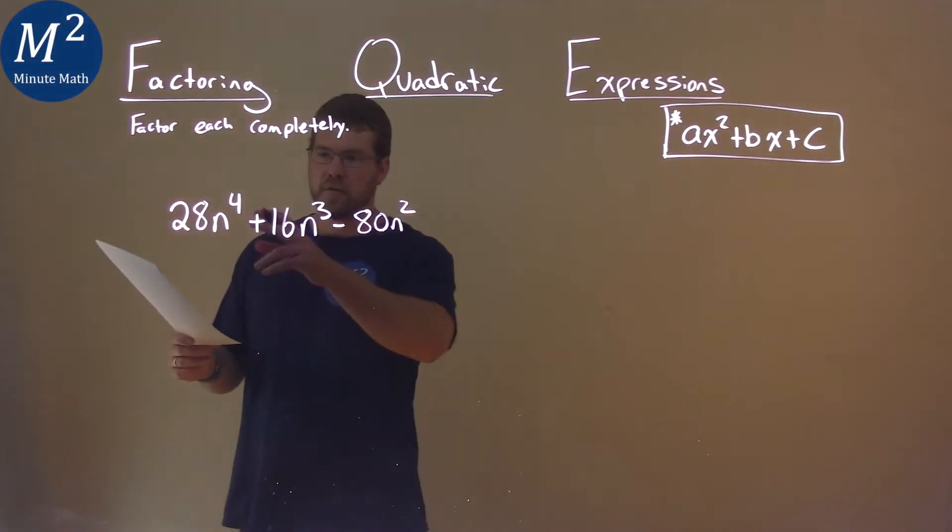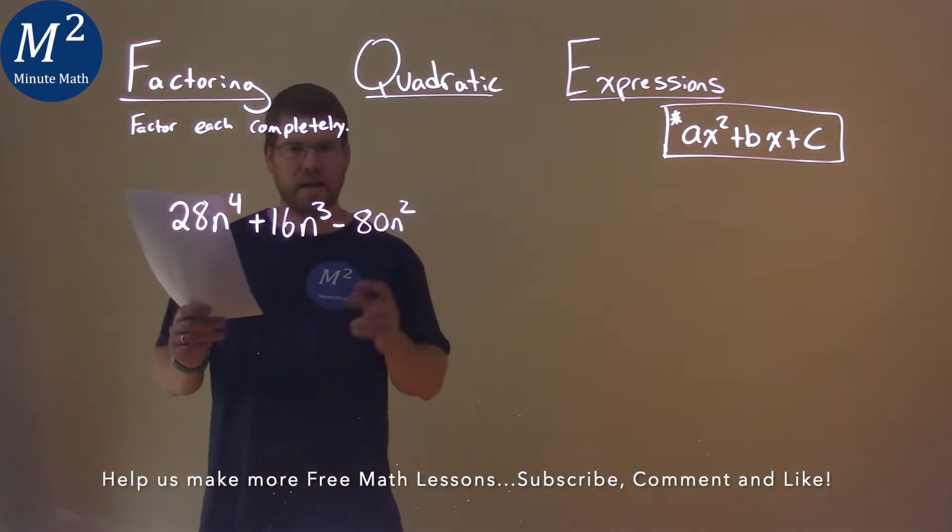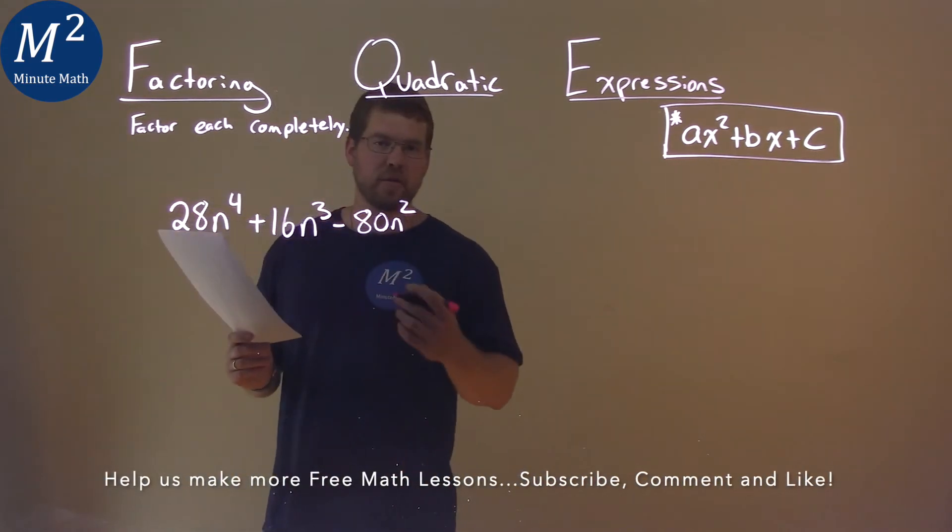We're given this problem right here. 28n to the 4th plus 16n to the 3rd minus 80n squared, and we need to factor this completely.